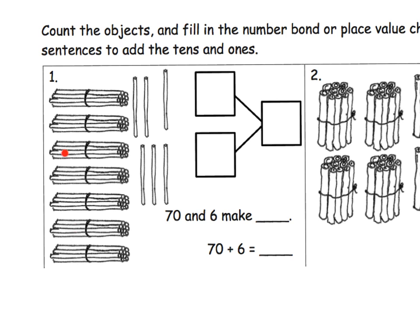So if we know that each bundle is 10, how many 10s do we have? We have 1, 2, 3, 4, 5, 6, 7 — that's 7 tens. So that makes this number right here 70. We can put in 70.